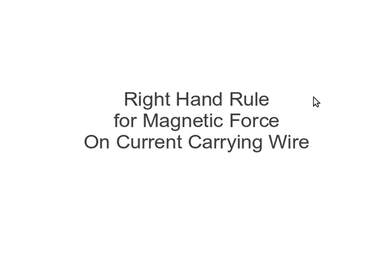Just like we had a right-hand rule for individual charges moving in magnetic fields, there's one for current carrying wires, which is very similar.